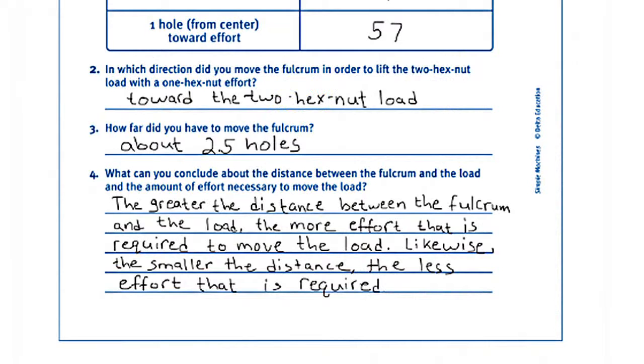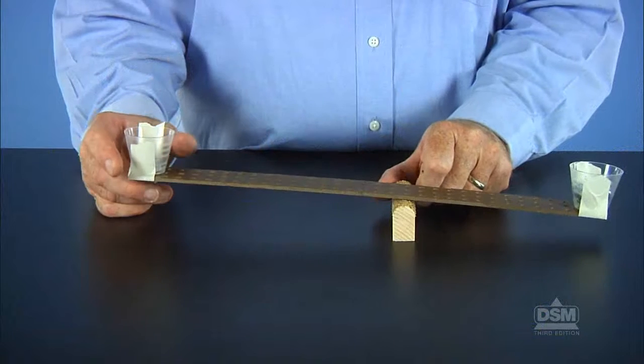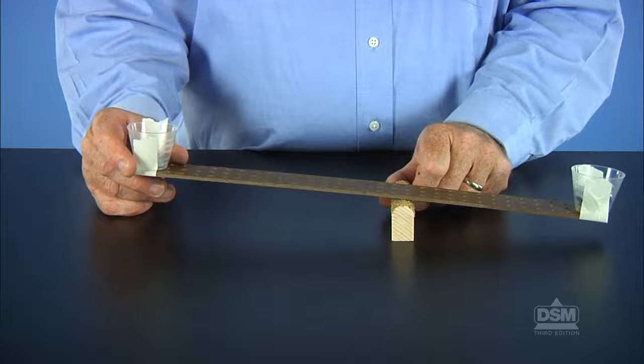Then instruct them to answer questions two through four on their activity sheets. When students have finished, ask, what effect did moving the fulcrum closer to the load have? Students should understand that by moving the fulcrum closer to the load, less effort was needed to lift the load.